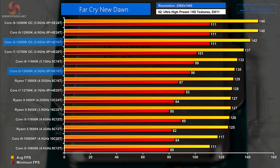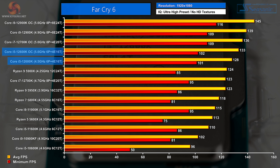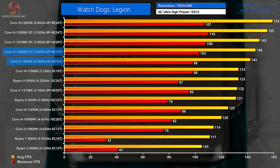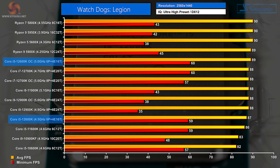Far Cry New Dawn at 1080p: the new Core i5s are up high in the charts. Far Cry New Dawn at 1440p: the overclocked Core i5 is flying along. Then Far Cry 6 at 1080p — this is almost unbelievable, a budget processor outperforming two-thirds of the field. Same story in Far Cry 6 at 1440p. Watch Dogs: Legion at 1080p — the new Core i5 is in the upper third of the chart. At 1440p a very few FPS covers the entire field, so the stock Core i5 is down low and the overclocked is up high, but we're only talking about a 2 FPS difference.